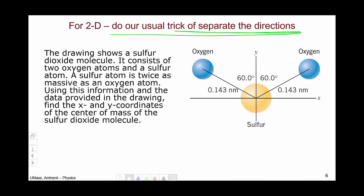So let's think about this example of a sulfur dioxide molecule. The sulfur dioxide molecule consists of two oxygen atoms and one sulfur, and in the problem we see that a sulfur atom is twice as massive as an oxygen atom.